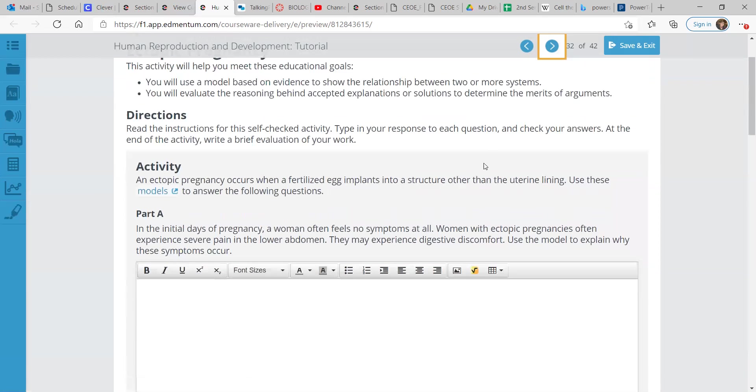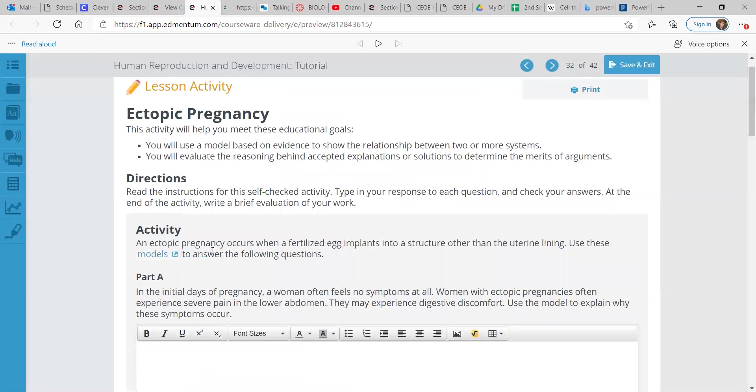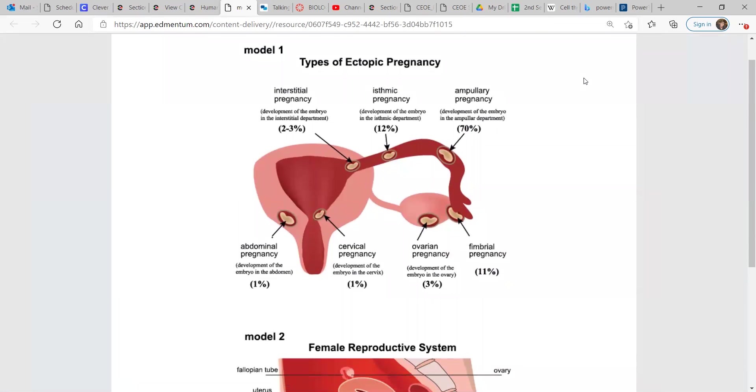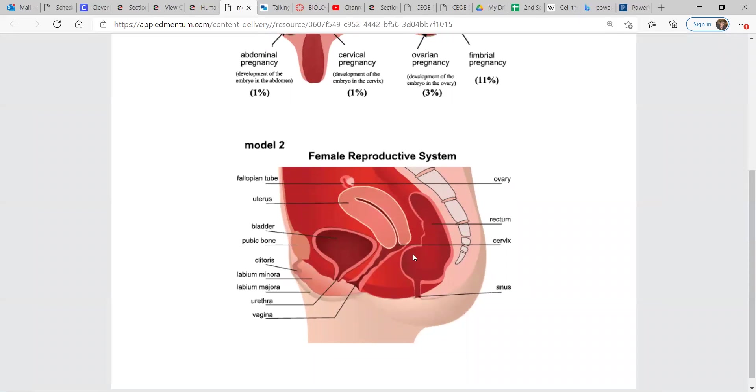Now we have a lesson activity. Ectopic pregnancy. So, we have several models showing what ectopic pregnancy is. That is, when a fertilized egg implants into a structure other than the uterine lining. So, here we go. Here's model one. Types of ectopic pregnancy: interstitial, isthmic, ampullary, abdominal, cervical, ovarian, fimbrial. And here's the female reproductive system overall.